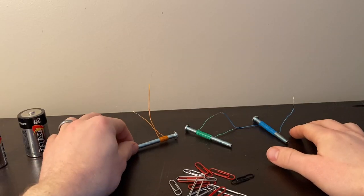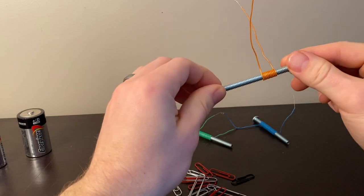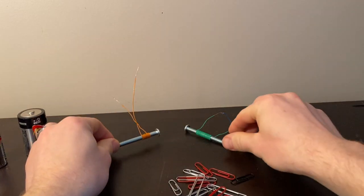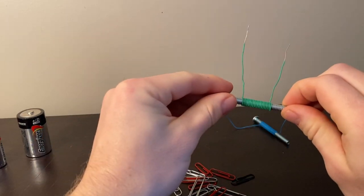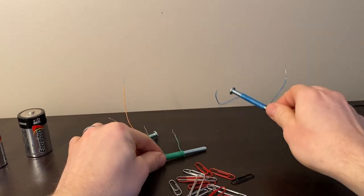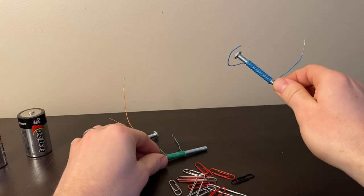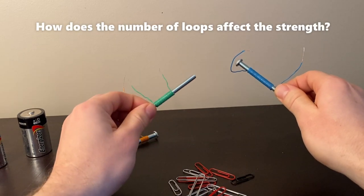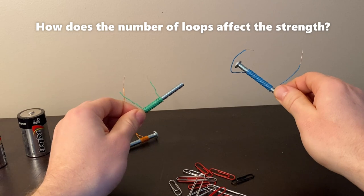So what I've done is I've taken three bolts and I've wrapped the wire around 10, 20, and 30 times. And we're going to explore how the number of loops affects the strength of our electromagnet.